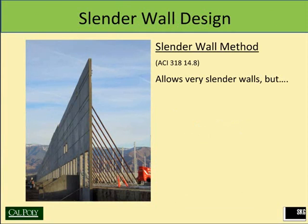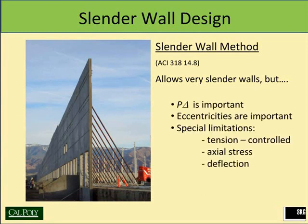The walls are very slender, and this method is only allowed because we can actually consider the important aspects of second-order effects that are going to apply to these walls. Eccentricities are very important. There are special limitations — they have to be tension-controlled, meaning they must have a flexural type of failure mode, not a compressive failure mode. The axial stress is limited so that we avoid extreme P-delta effects.